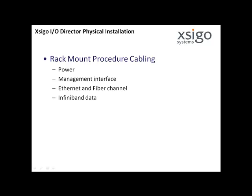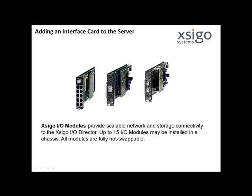SEGO IO Director Physical Installation. The rack mount procedure of the SEGO IO Director is described in the product documentation. Once installed in a data center rack, provide power cables, management interface cables, Ethernet and fiber channel, and InfiniBand data cables. Refer to your server's product documentation for the installation procedures required to add an interface card to the server.